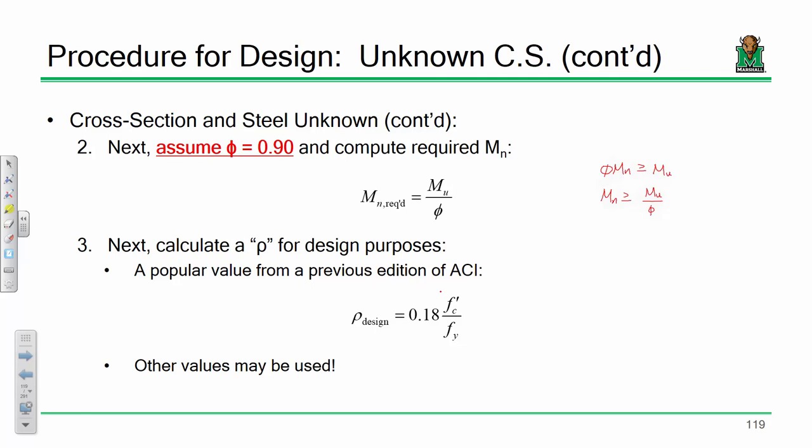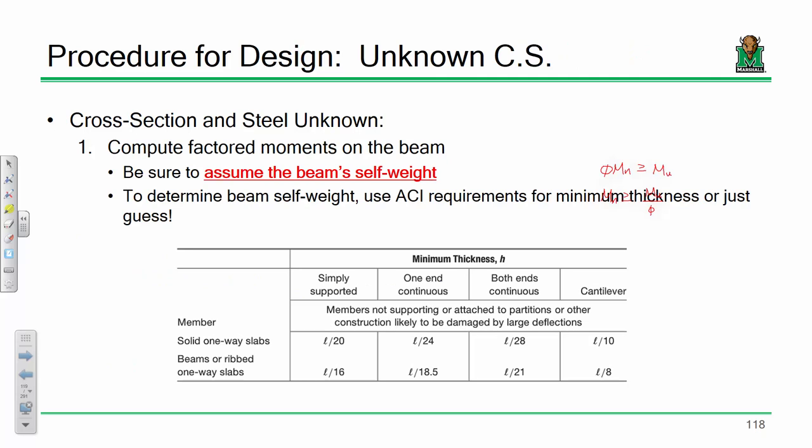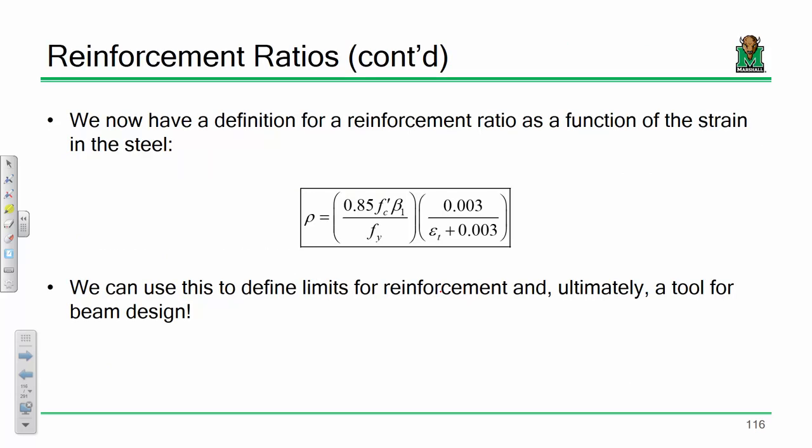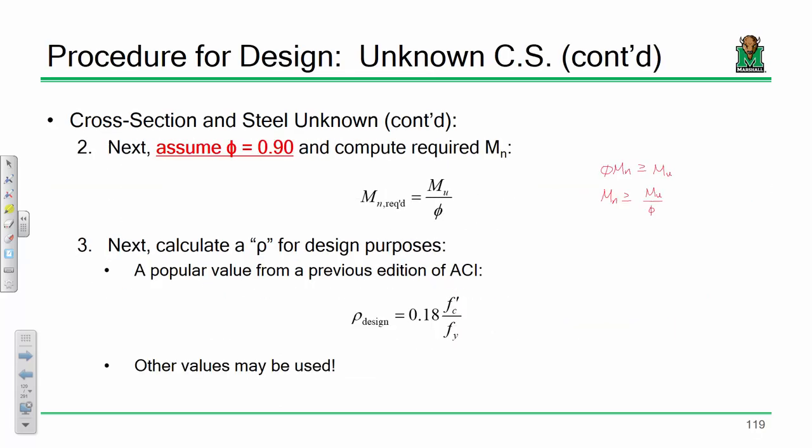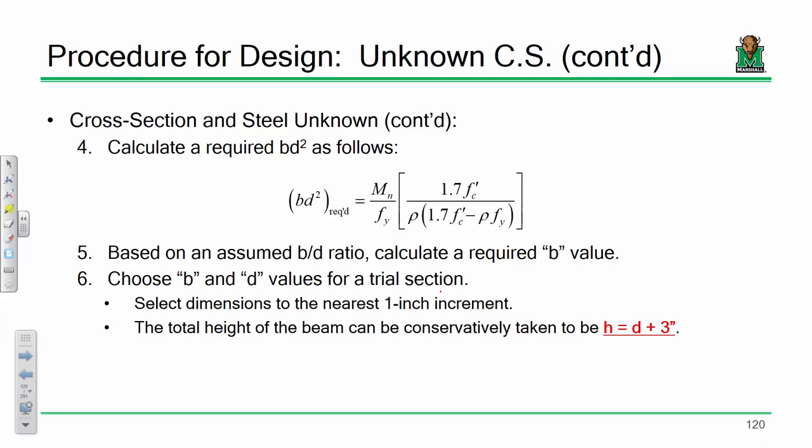Step three: calculate ρ for design purposes. When in doubt, use 0.18 fc' / fy. If you don't want to use that, use a target strain approach and plug and chug. Once you've got your ρ value and required Mn, plug and chug to get BD². BD² is essentially a measure of how big your beam needs to be. Once you've got BD², steps five and six tell you your required beam width and required beam depth.